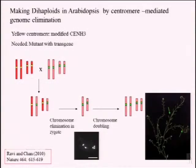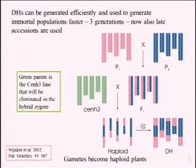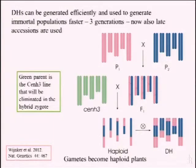These haploid plants are sterile because there's no chromosome pairing, but sometimes spontaneous chromosome doubling occurs. Arabidopsis has many flowers, so there's a reasonable chance of getting some doubling — you can easily see it because some siliques grow out. What you harvest there are plants that have doubled chromosomes. When you combine this CENH3 variant with a hybrid from crossing two accessions, what you get are haploids representing the gametes of this heterozygous plant, and by chromosome doubling you get dihaploids. Many people are now using this to generate recombinant inbred line populations, and we're no longer afraid of using late accessions because of this method.